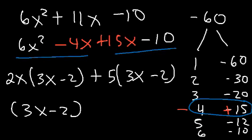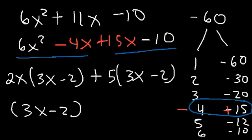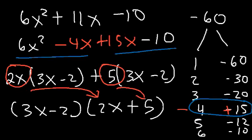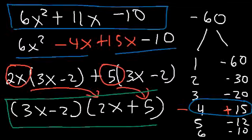Now let's factor out 3x minus 2. If we take out 3x minus 2 from the first term, we're left with 2x. If we remove it from the second term, we're left with 5. So the answer is 3x minus 2 times 2x plus 5.